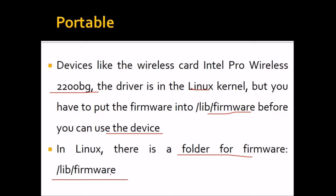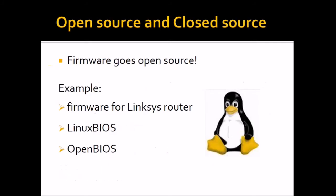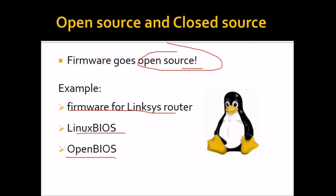Firmware also has open source availability. Open source programs are those whose source code is open under various licenses. For example, there is firmware available for various routers, Linux BIOS, and OpenBIOS.